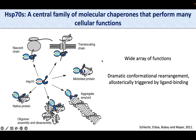HSP-70 can perform all of these functions because it goes through a dramatic conformational rearrangement that is allosterically triggered by ligand binding.